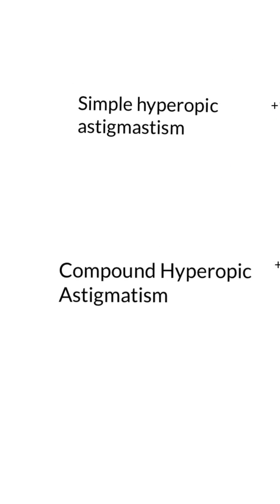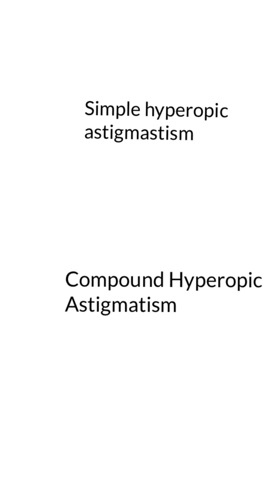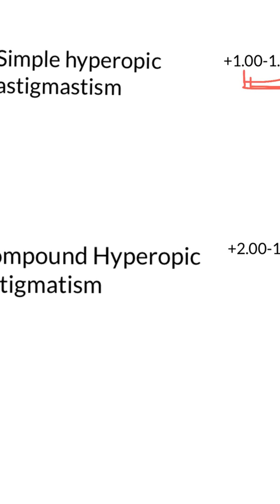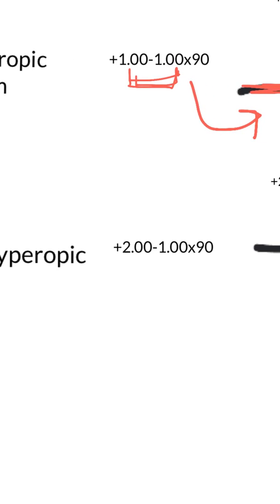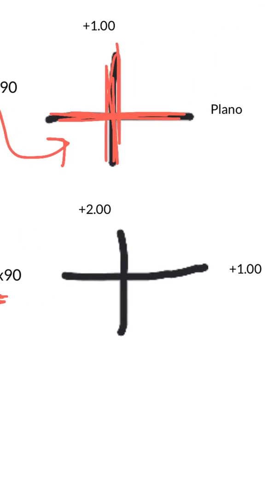The last type is compound hyperopic astigmatism. The prescription may look like mixed astigmatism because you have a positive and a negative number, but when you draw out the optical cross, you have two positive numbers — a positive on the horizontal meridian and a positive on the vertical meridian.